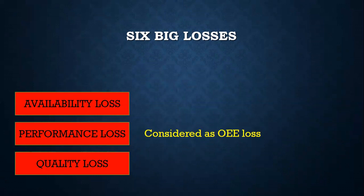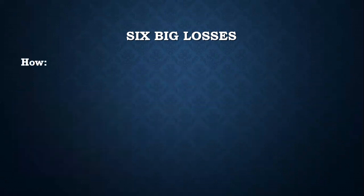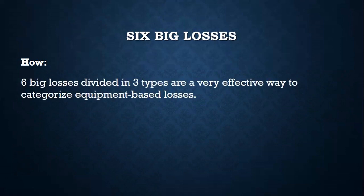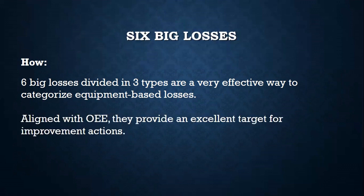The next part is how to identify and categorize six big losses. These six big losses are categorized into three types shown earlier: availability, performance, and quality — for effective assessment. Two losses are mapped for each category, and they are also aligned with OEE calculation, providing efficient improvement tracking as well.